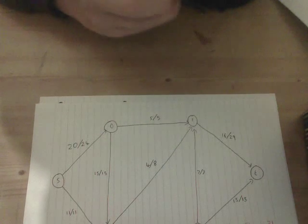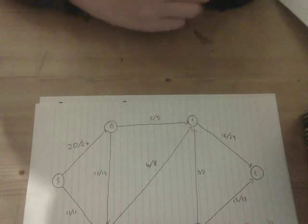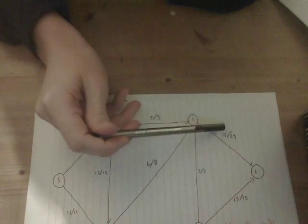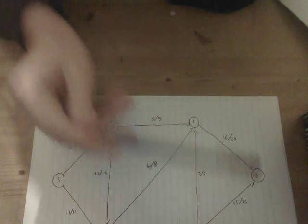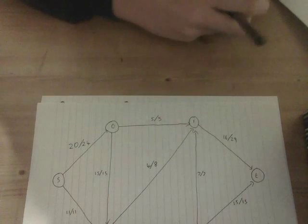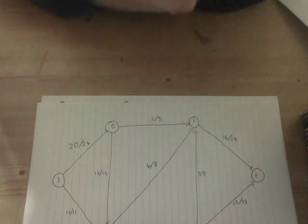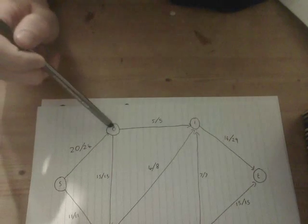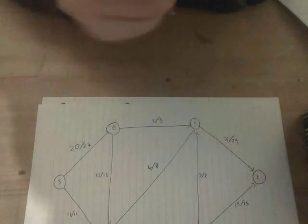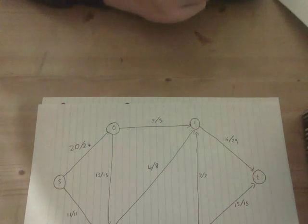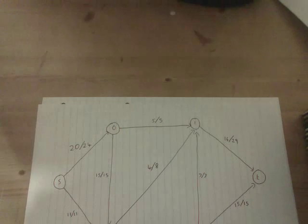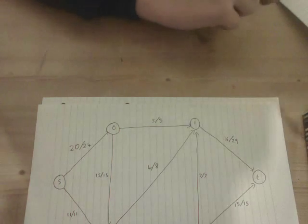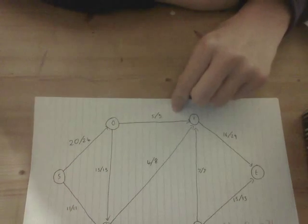From this, it is very easy to work out the maximum flow, as it is just the flow into the sink, which is the numerator of the two values flowing in. So 15 plus 16, which is 31. Now, just to check you've used the algorithm correctly, you should always check that the values flowing into the sink equal the values flowing out of the source. So 20 plus 11 does equal 31, therefore this is working correctly. And therefore, we can confidently say we have found the maximum flow of this directed graph by using multiple augmented paths in order to do so.